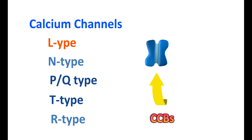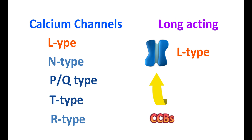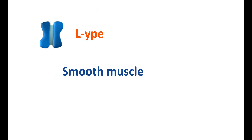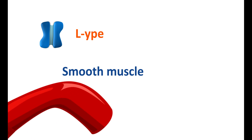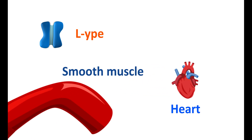CCBs are blocking L-type calcium channels. These L-type calcium channels are the long-acting voltage-gated calcium channels responsible for entry of calcium into the target muscle. L-type calcium channels are present on smooth muscle including vascular smooth muscle, and also on the heart. Being voltage-gated, they open and close based on membrane potential.